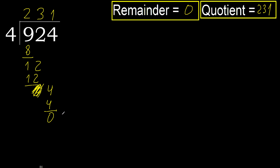The remainder is 0, therefore 924 divided by 4 is 231. Thank you.